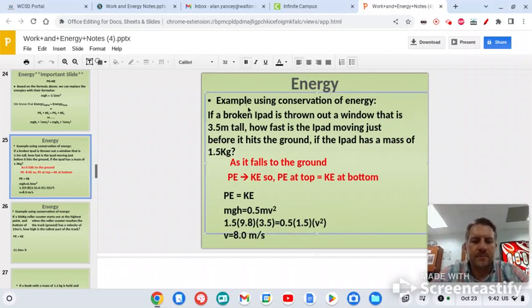So an example here would be using the conservation of energy. So if a broken iPad is thrown out a window that is 3.5 meters tall, how fast would the iPad be moving just before it hits the ground if the iPad has a mass of 1.5 kilograms. So as it falls to the ground, potential energy turns into kinetic energy. So potential energy at the top and kinetic energy at the bottom. They equal each other.